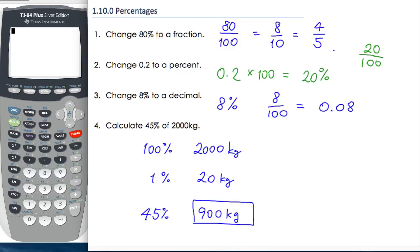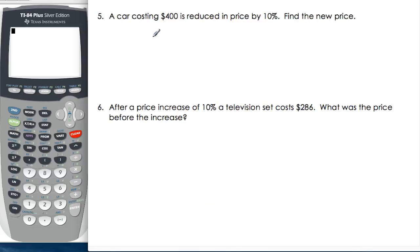Let's have a look at a couple more. A car costing $400 is reduced in price by 10%. Find the new price. So what do we know? We know that 100% was 400. So again, back to 1%. 1%, you have to divide by 100, so I'm going to do the same here. $4.